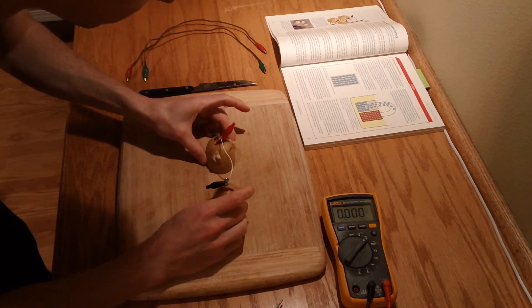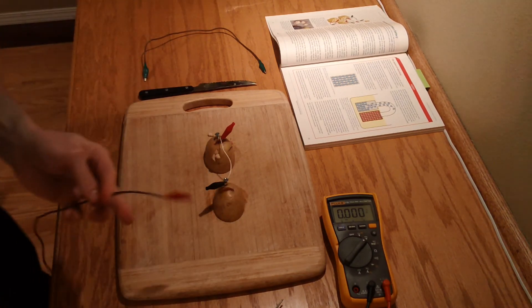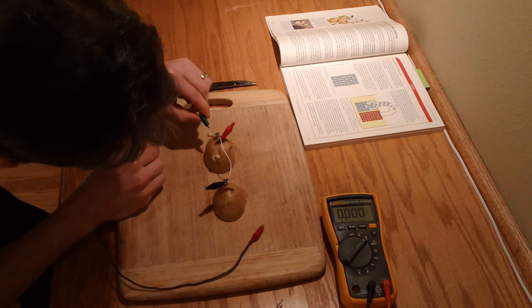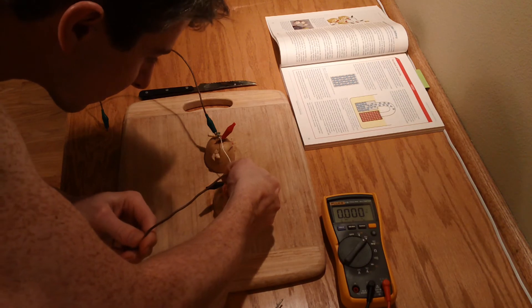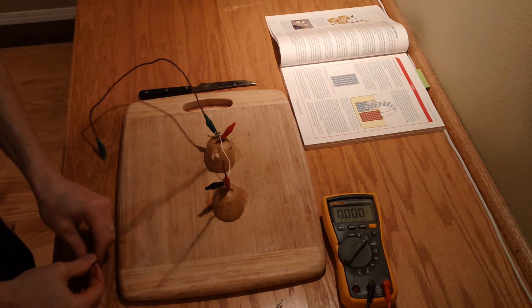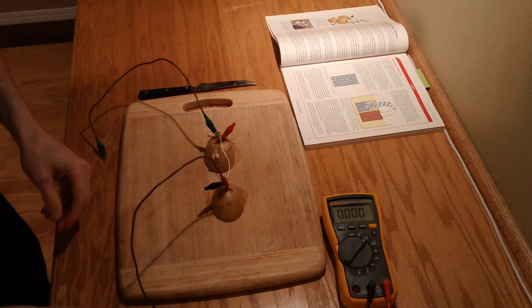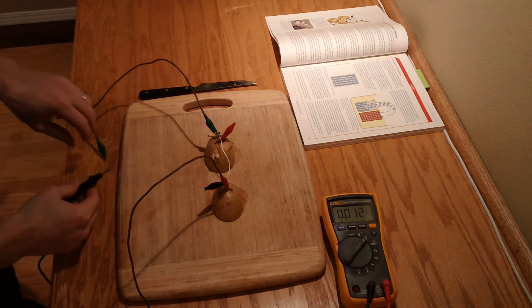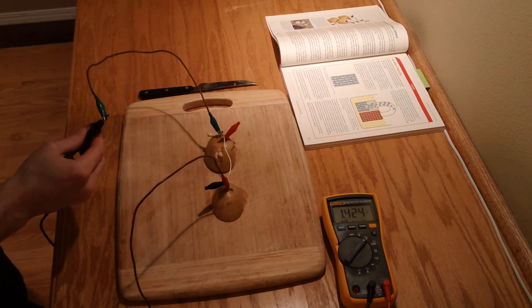Cool. And then now all we need to do is say, okay, so we know this is going to be the positive side, so we'll just put these guys on their perspective sides like this. Nice, solid connection. And we will put that guy on there. So now all we need to do is touch our final lead here and this should give us our voltage reading. Oh, isn't that interesting?